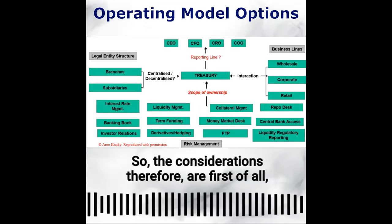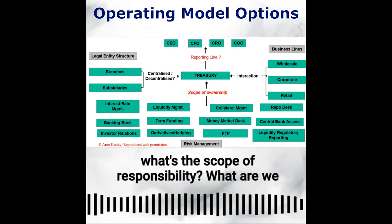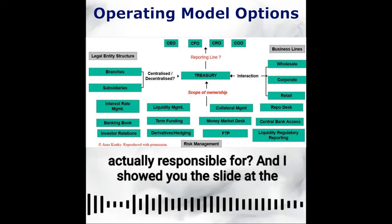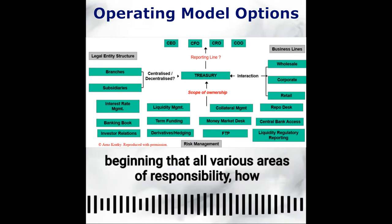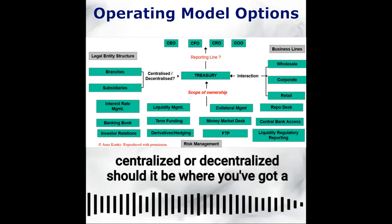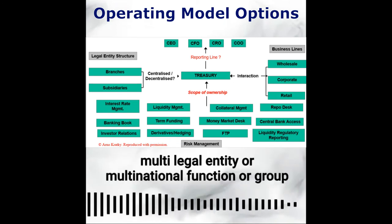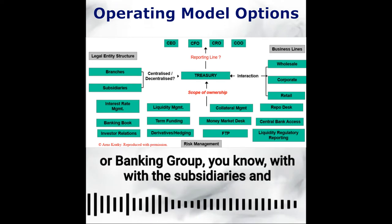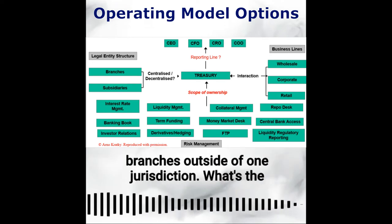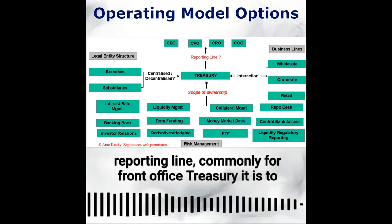So the considerations therefore are: first, what's the scope of responsibility? What are we actually responsible for in treasury? And I showed you the slide at the beginning covering all the various areas of responsibility. Then: how centralized or decentralized should it be, where you've got a multi-legal entity or multinational function — a banking group with different subsidiaries and branches outside of one jurisdiction.